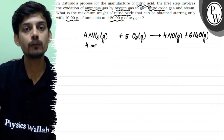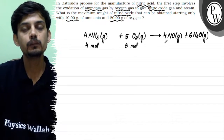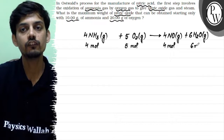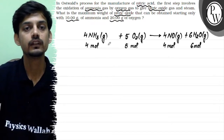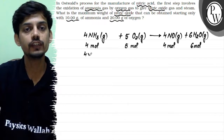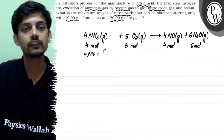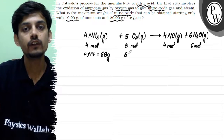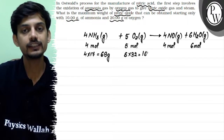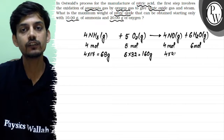4 moles of ammonia will react with 5 moles of oxygen to produce 4 moles of nitric oxide and 6 moles of water or steam. Converting to mass: 4 into the molar mass of ammonia (17) gives 68 grams; 5 into the molar mass of oxygen (32) gives 160 grams; and 4 into the molar mass of nitric oxide (30) gives 120 grams.